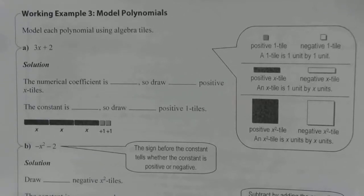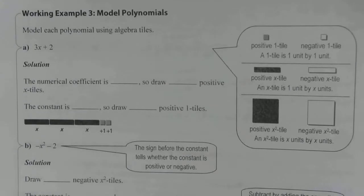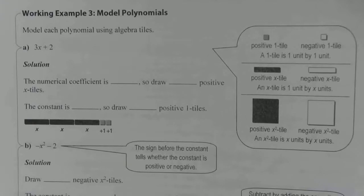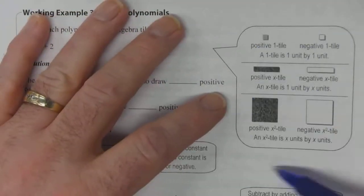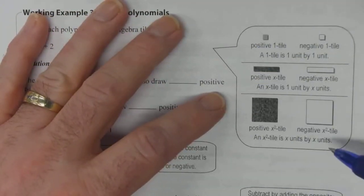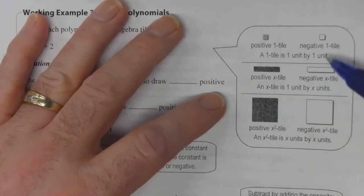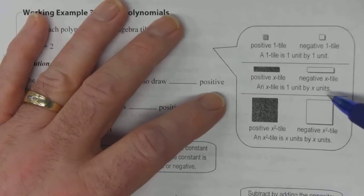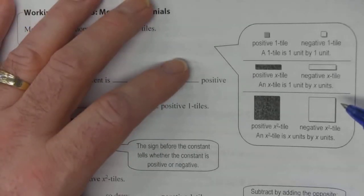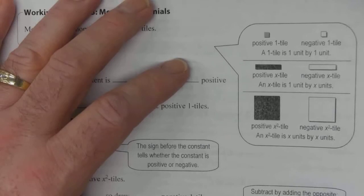Number three: model polynomials — model each polynomial using algebra tiles. We need to know how to use algebra tiles, so this little chart here is very important. You need to get used to it. We have three different shapes that we use when drawing our algebra tiles. Precision when drawing these is important, especially on a quiz or an exam, because it's easy to confuse some of these.